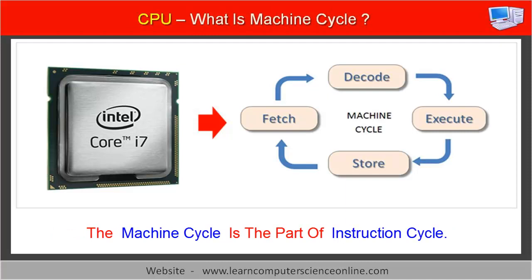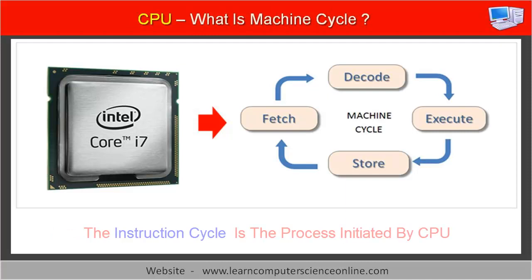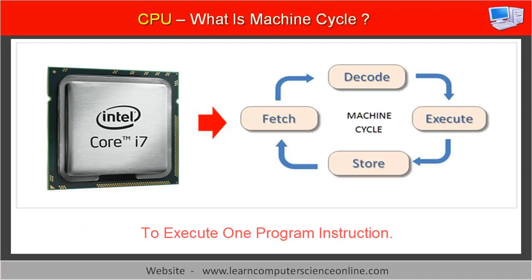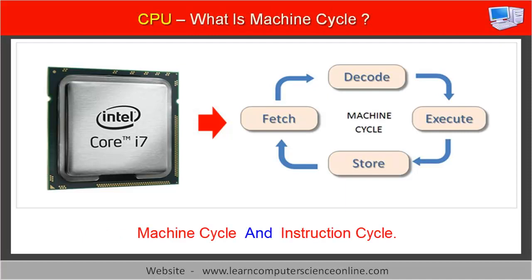The machine cycle is also alternately referred to as instruction cycle. However, the machine cycle is a part of the instruction cycle, whereas the instruction cycle is the process initiated by the CPU to execute one program instruction. Let us now discuss both machine cycle and instruction cycle in detail.